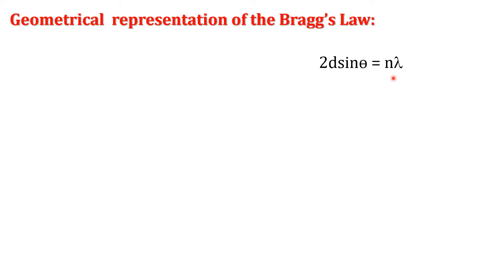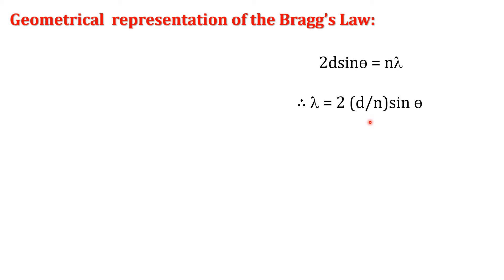That condition is Bragg's law: 2d sin(theta) = n*lambda, where d is the interplanar spacing, theta is the Bragg's angle, n is the order of diffraction, and lambda is the wavelength of X-ray. We simplify that equation to lambda = 2*(d/n)*sin(theta), where d/n represents the interplanar spacing for imaginary planes whose Miller indices are (nh, nk, nl). For a given plane (h, k, l) we take n equal to 1.